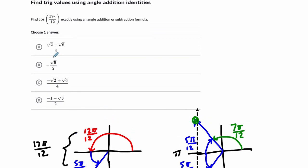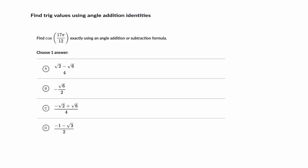In this case, I believe the answer is choice A - it's missing the line because of the way I zoomed out. Let's do one, maybe two more so you can see a variety of these problems.